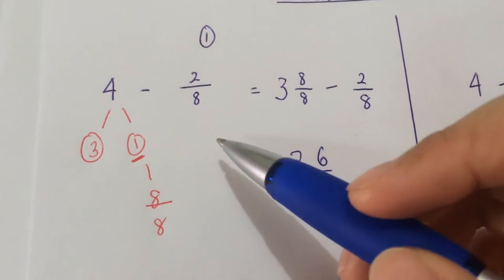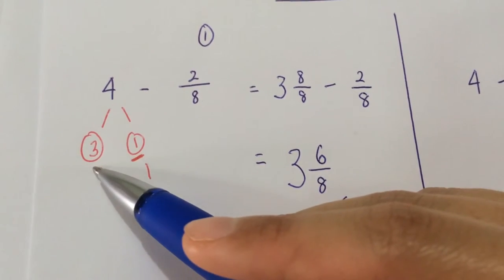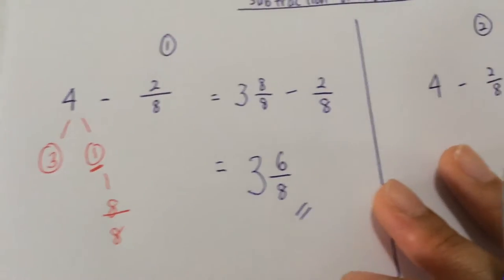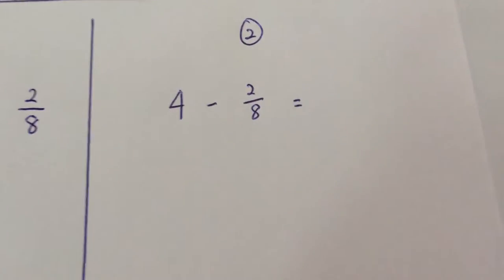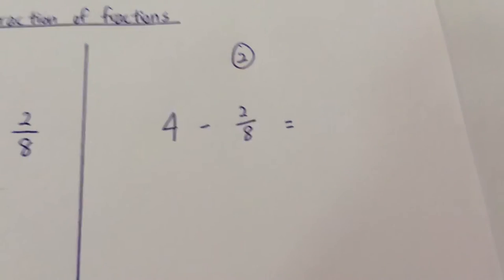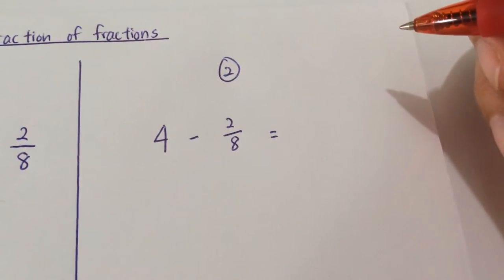So this is the method where you split 4 whole into a whole number and a fraction. Let's take a look at method 2. In method 2, I'm going to make 4 whole an improper fraction, which means that...